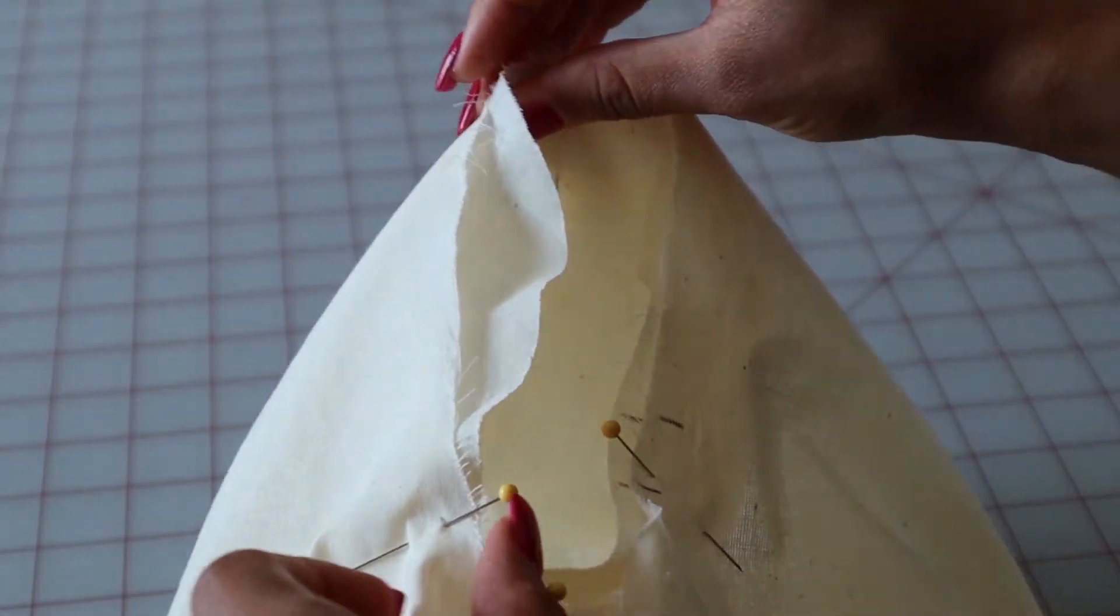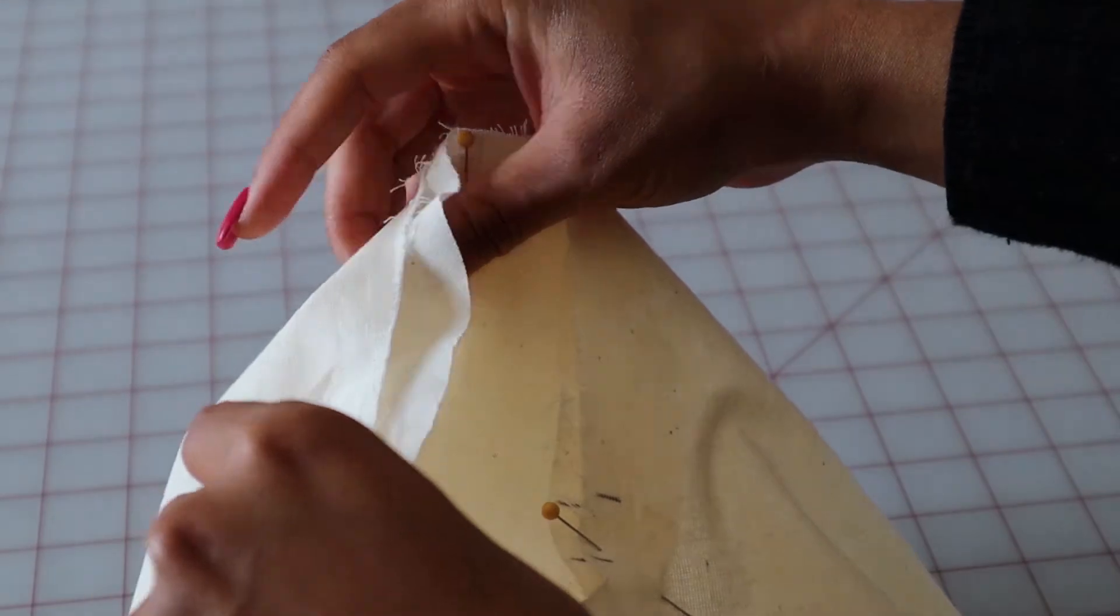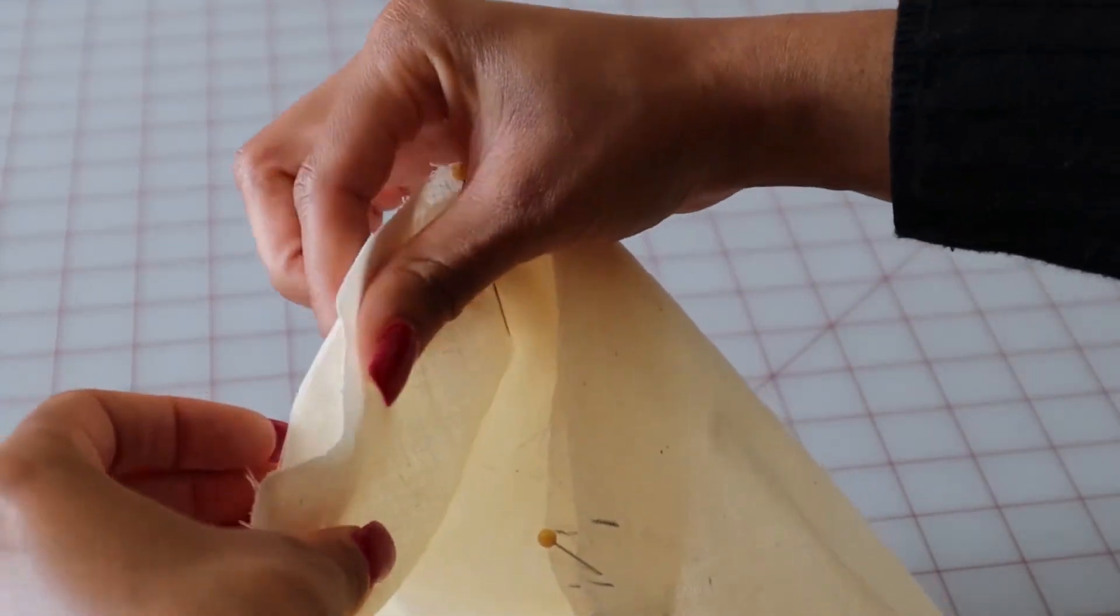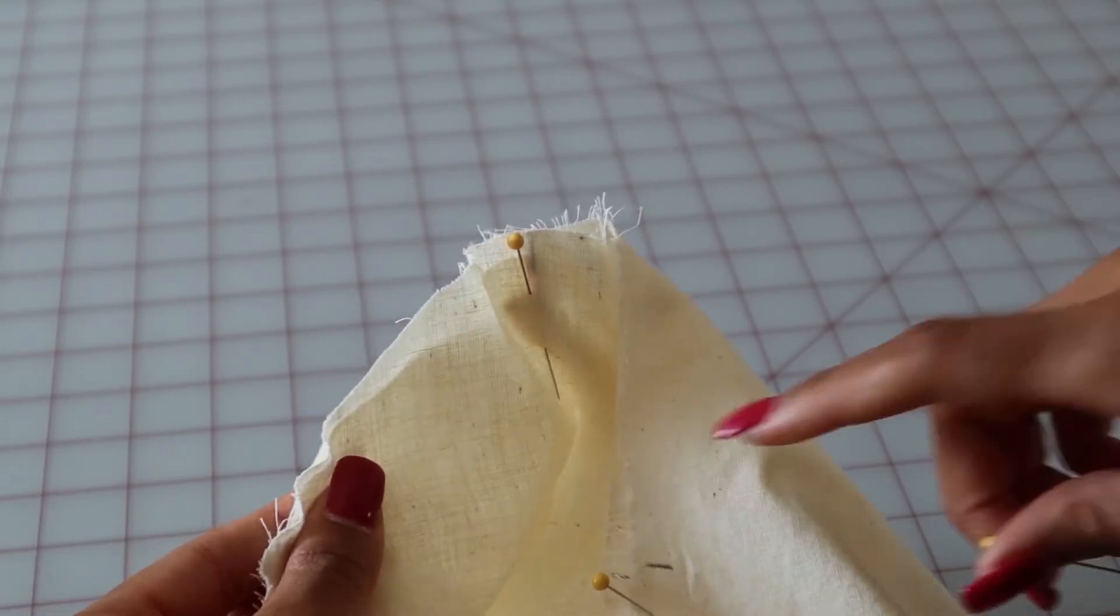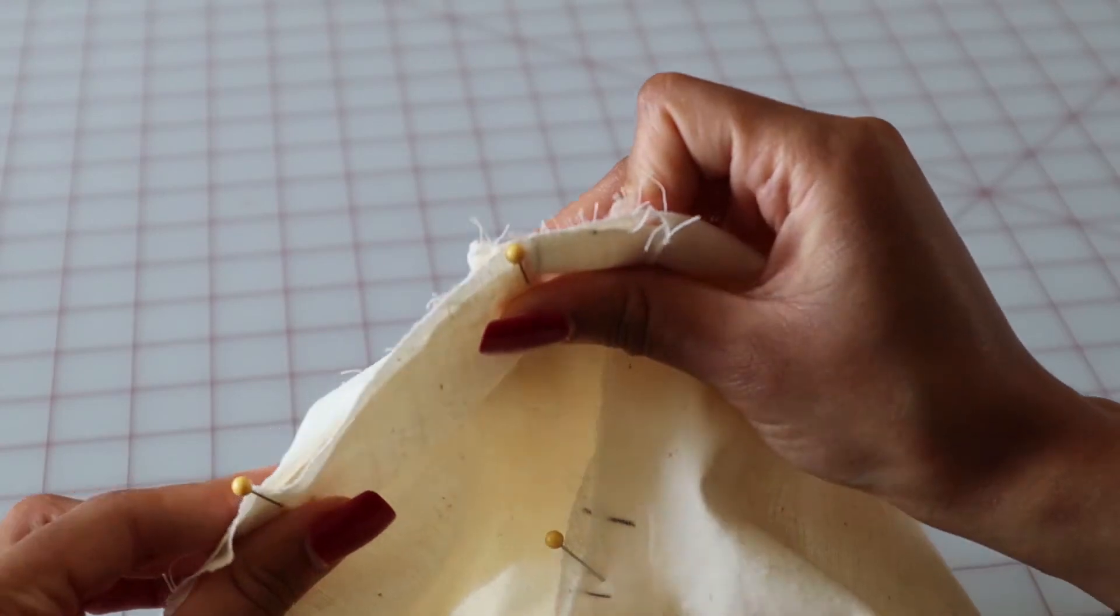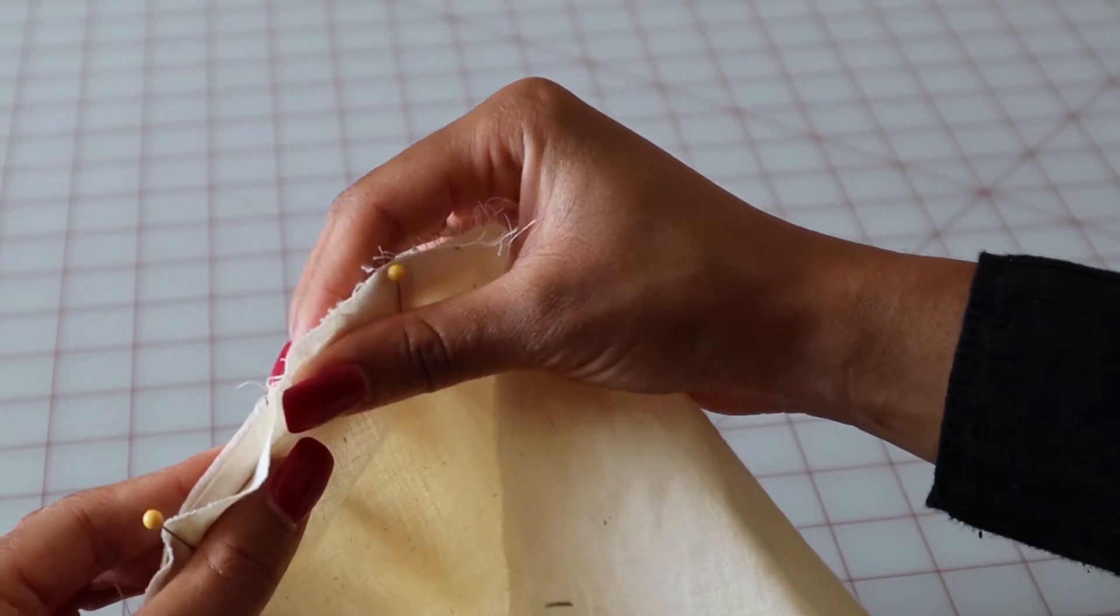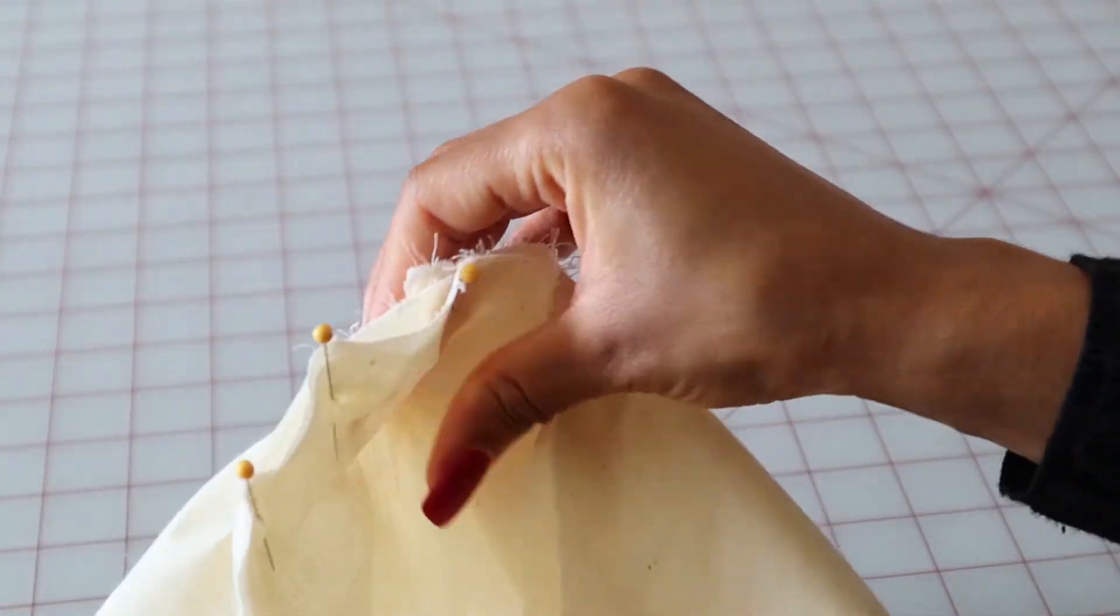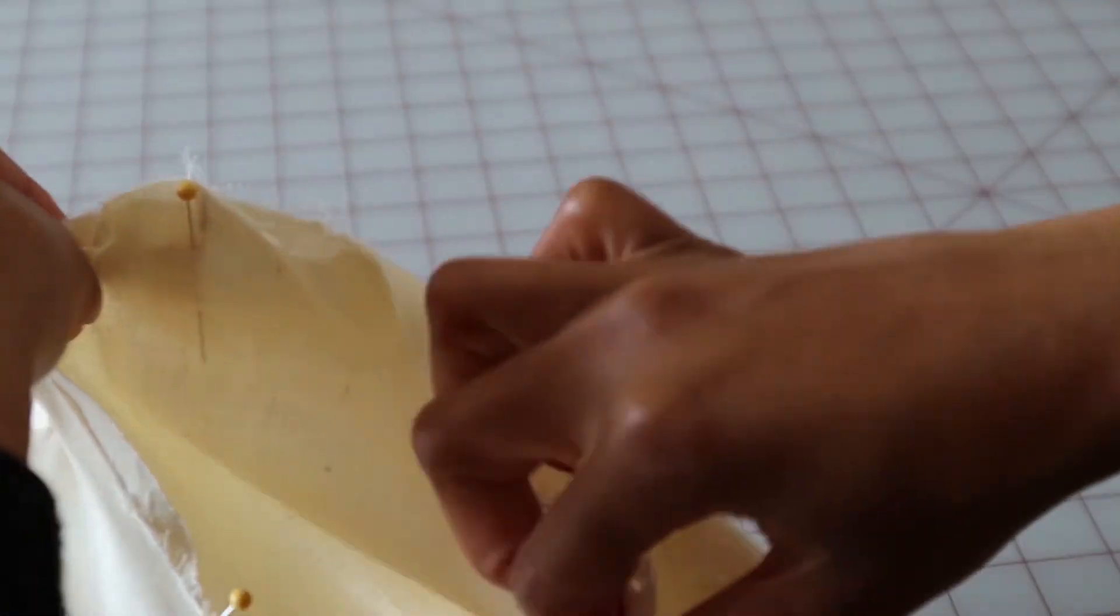So first just make sure that the armhole of your bodice is completely flat. The ease should only be in the sleeve itself. Okay, so what you're going to do is you're going to form the ease with your fingers, and the ease looks like waves. So just pin in between those little waves there to hold it in place. Okay, so now we will do this side.